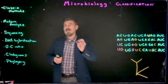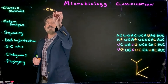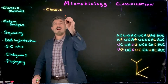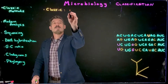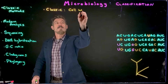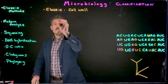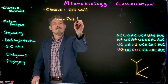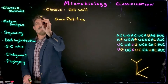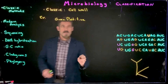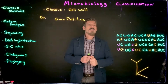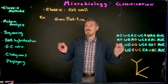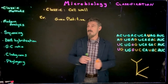The first classic method — and modern analysis as well — is going to use cell wall. For example, we might take gram-positive bacteria versus gram-negative bacteria. There are also bacteria that have slightly different types of cell wall, but we're looking at the broader strokes here.